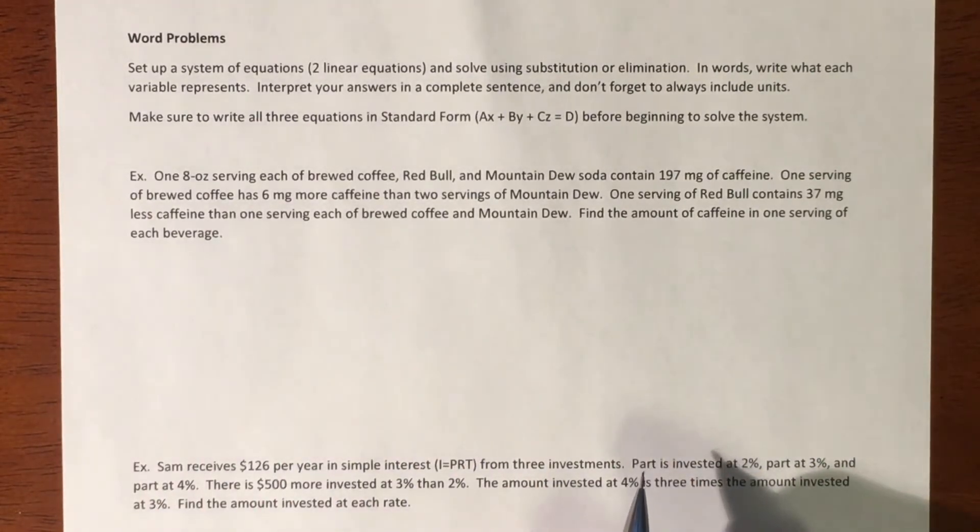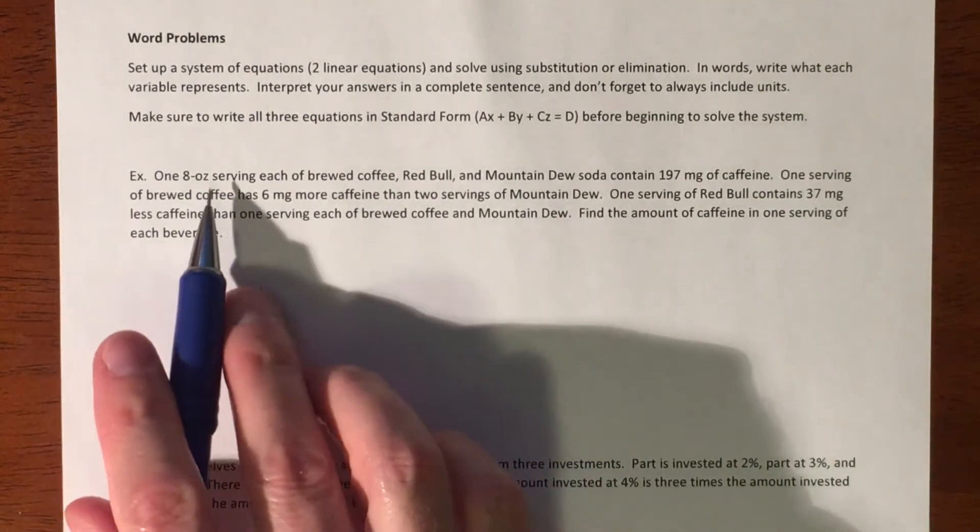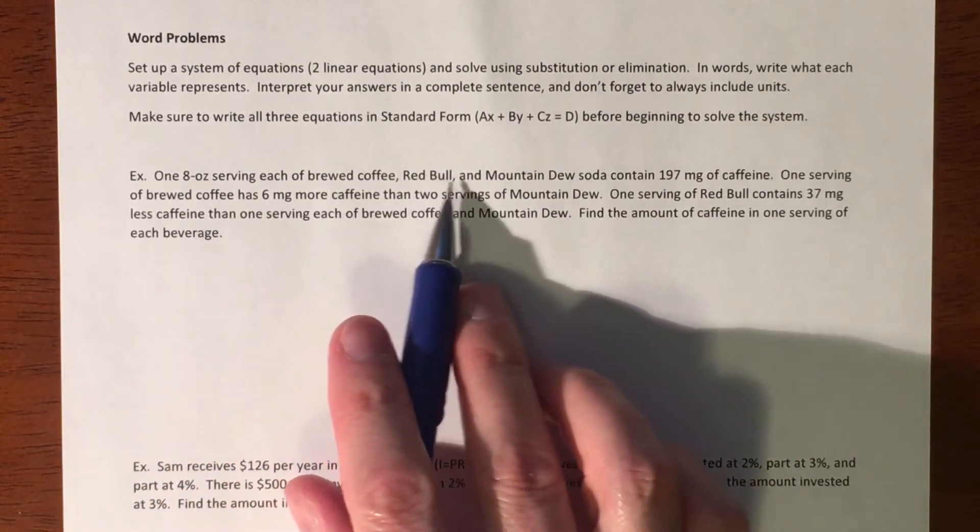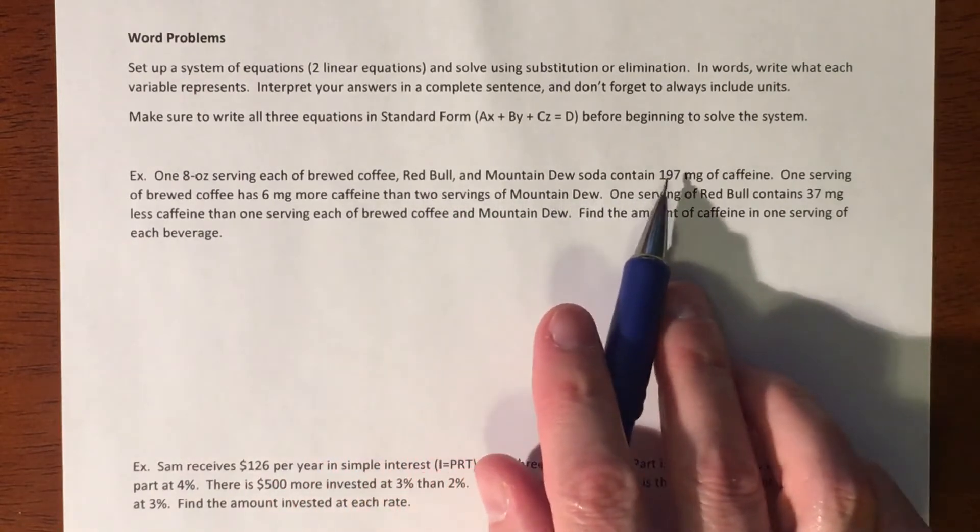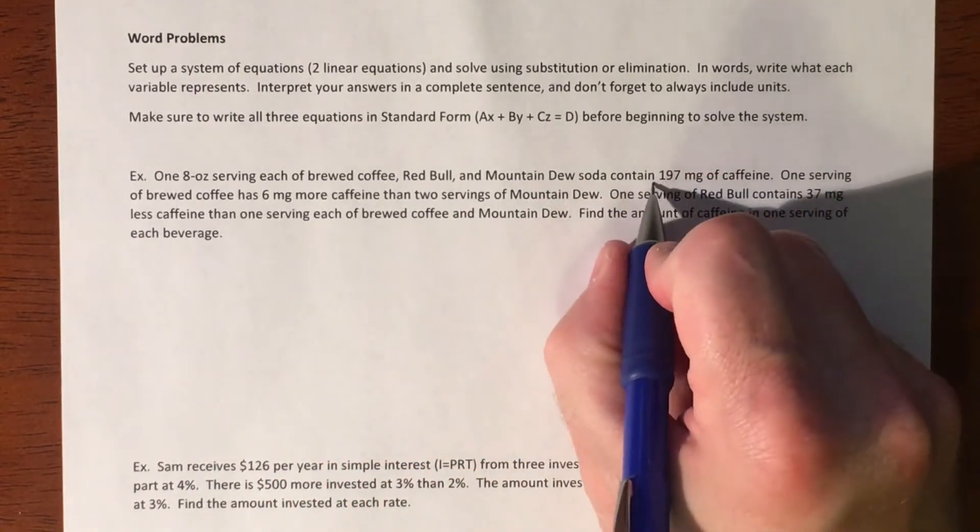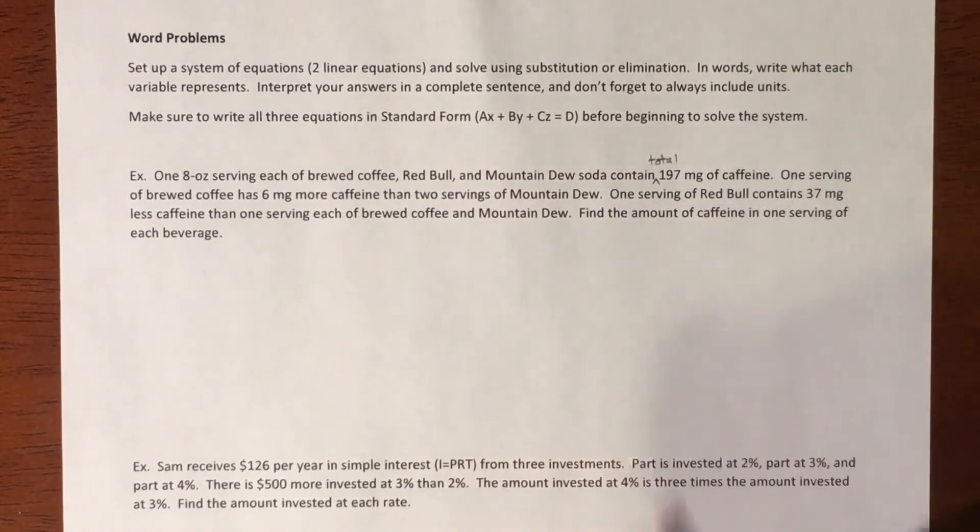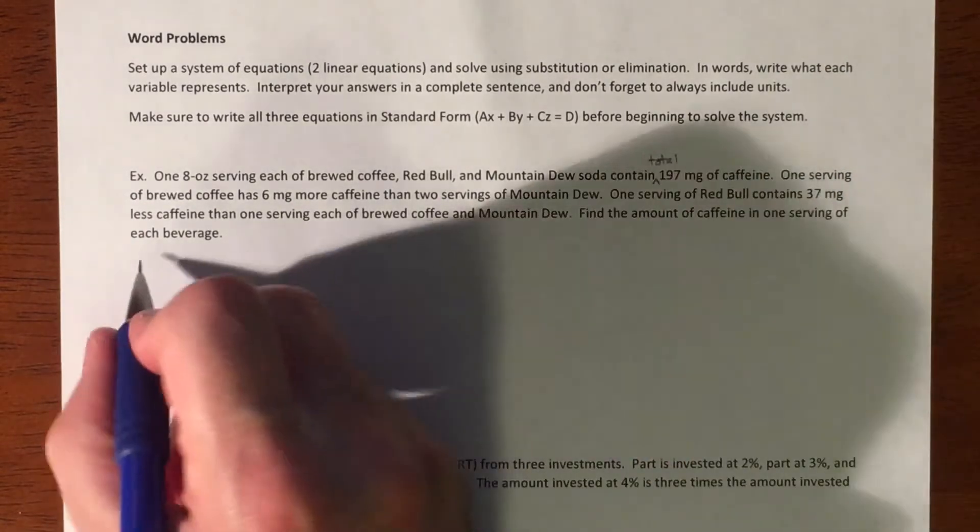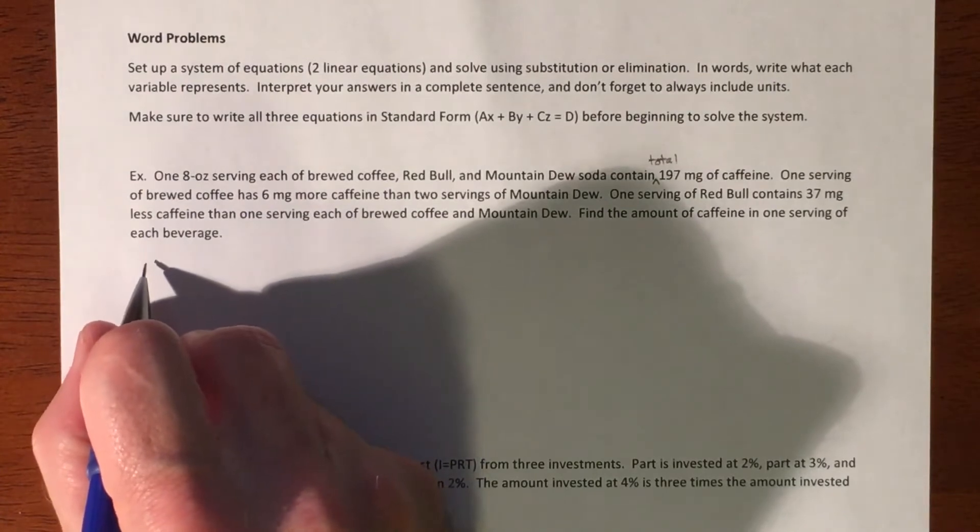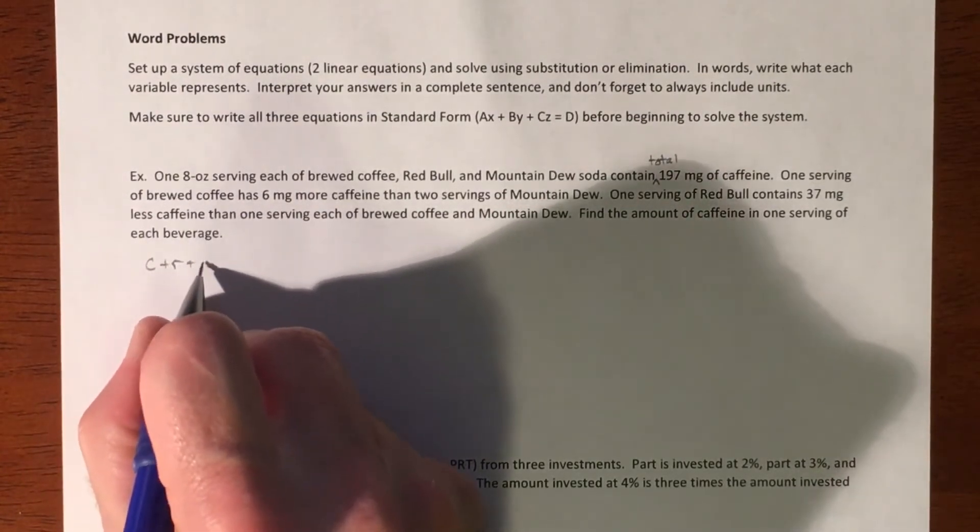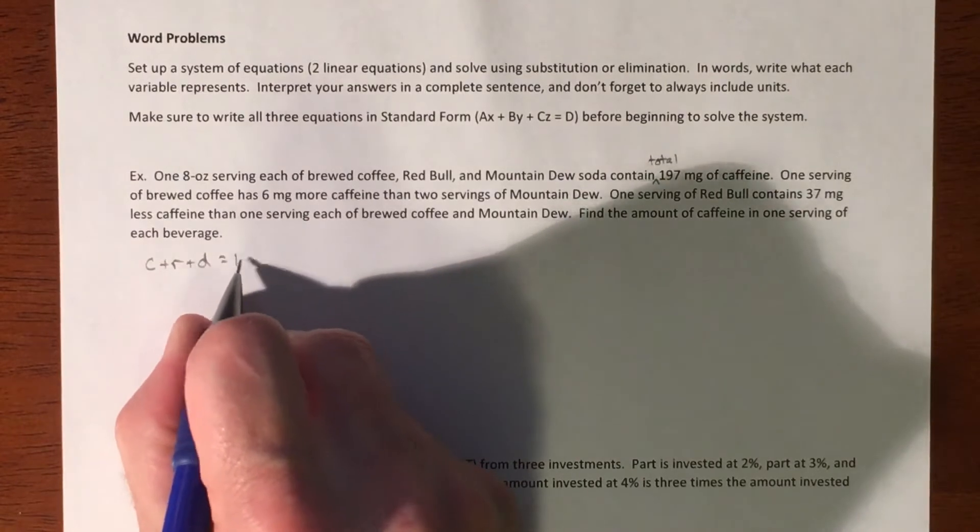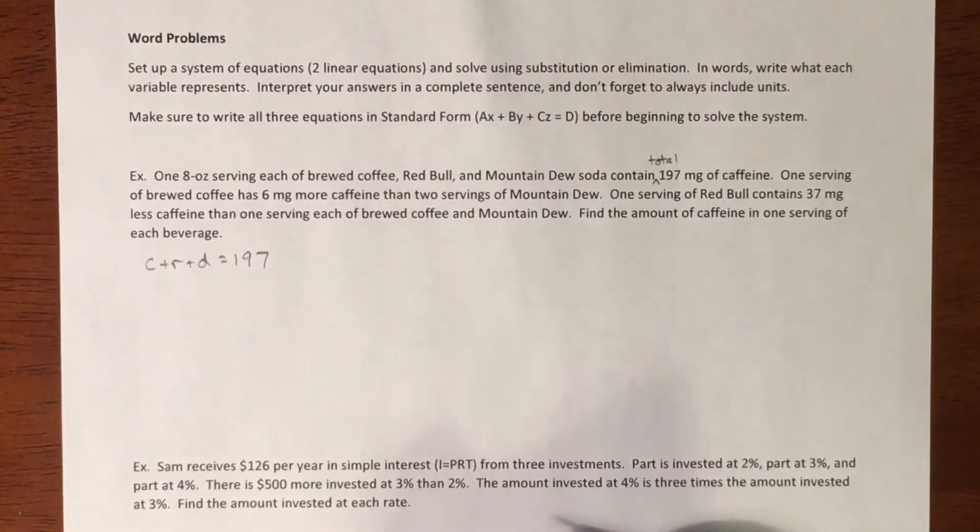So the first one's kind of a one serving each of brewed coffee, Mountain Dew, and Red Bull contains, it's supposed to be a total of 197 milligrams of coffee. So we're looking at coffee plus Red Bull plus Dew equals 197.